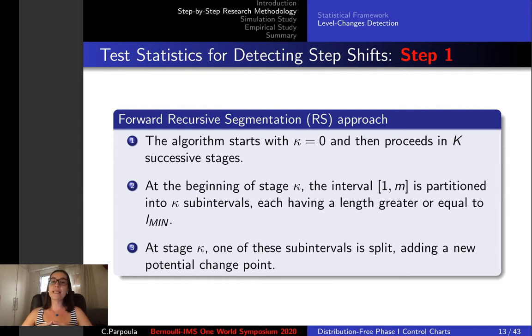Here kappa capital denotes the maximum number of hypothetical change points to search for. At the beginning of stage kappa, the interval one to m is partitioned into kappa sub-intervals, each having a length greater or equal to l-min.